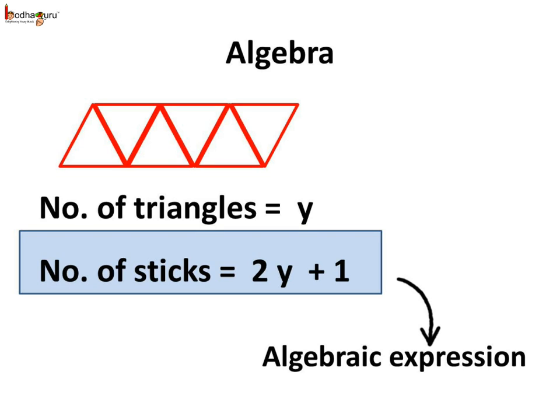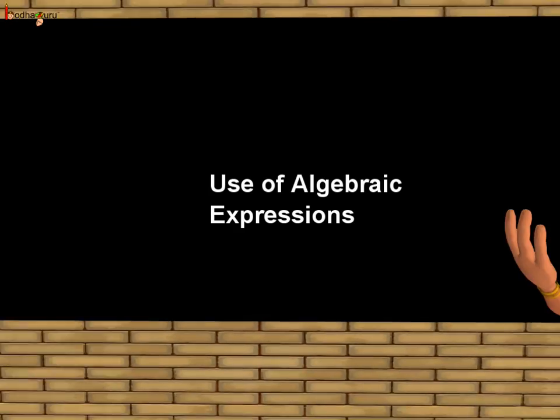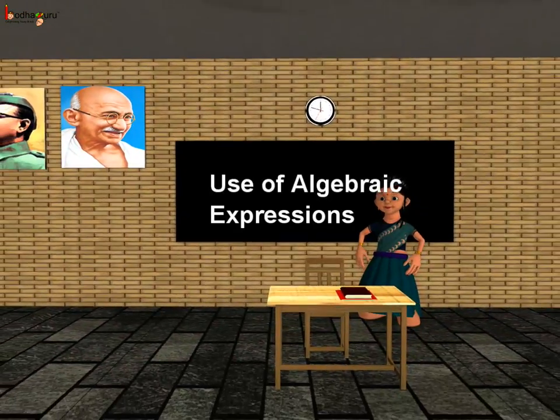So here we made an algebraic expression 2Y plus 1, which relates the number of triangles and the number of sticks required to make it. Y is called the variable because the value of Y can have different values like 1, 2, 3, 4 and so on — that is, the value of Y is not fixed. In different cases Y would have different values. So that was all about algebraic expressions and their use in real life. Bye-bye children.